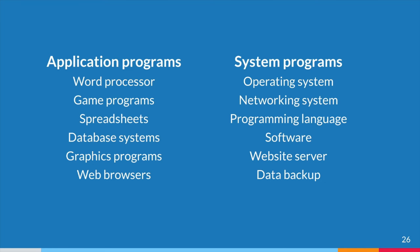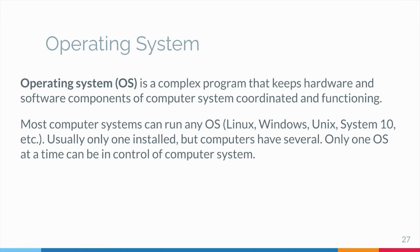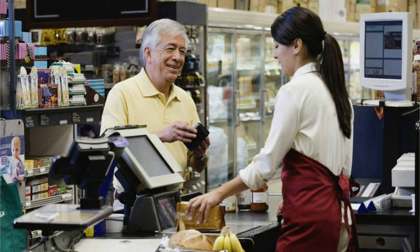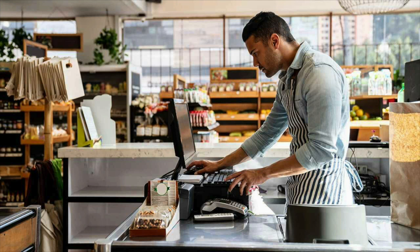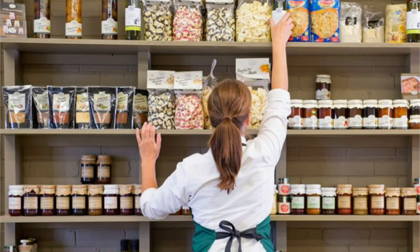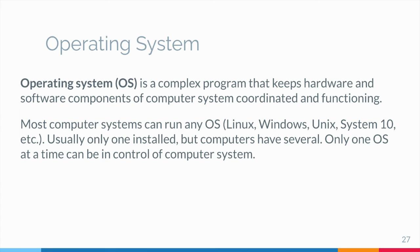An operating system is a complex program that keeps the hardware and software components of a computer system coordinated and functioning. It is like the owner of a small shop who keeps everything in order by attending to customers, accepting deliveries, stocking the shelves, doing the bookkeeping, and so on. The shopkeeper must promptly attend to tasks as they arise. Without the shopkeeper, the shop could not function.